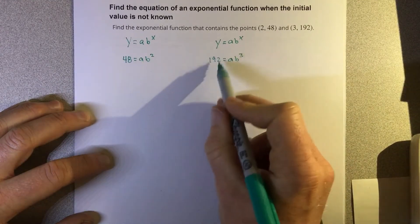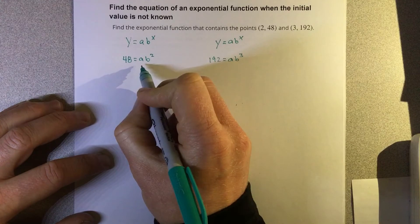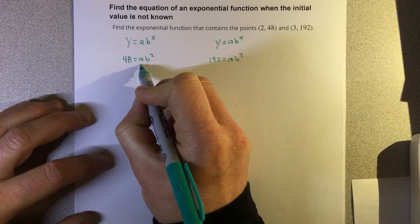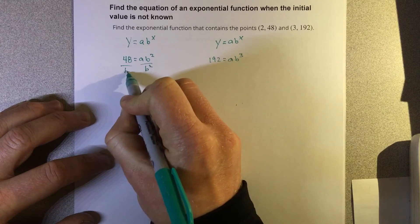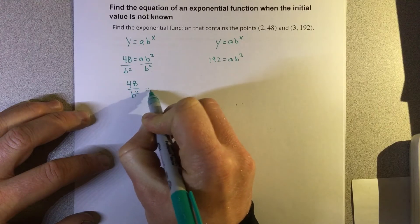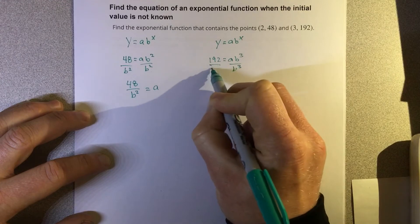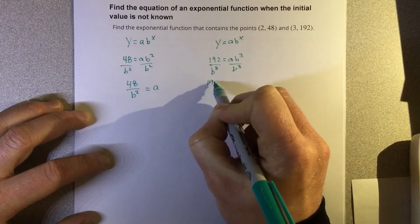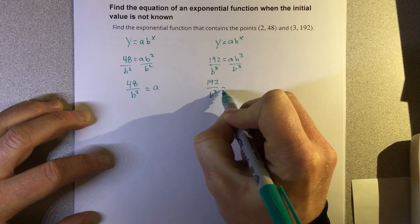Now we're going to solve each equation for a and set them equal to each other. Let's divide by b squared. We get 48 over b squared equals a. Divide by b cubed, and we get 192 over b cubed equals a.